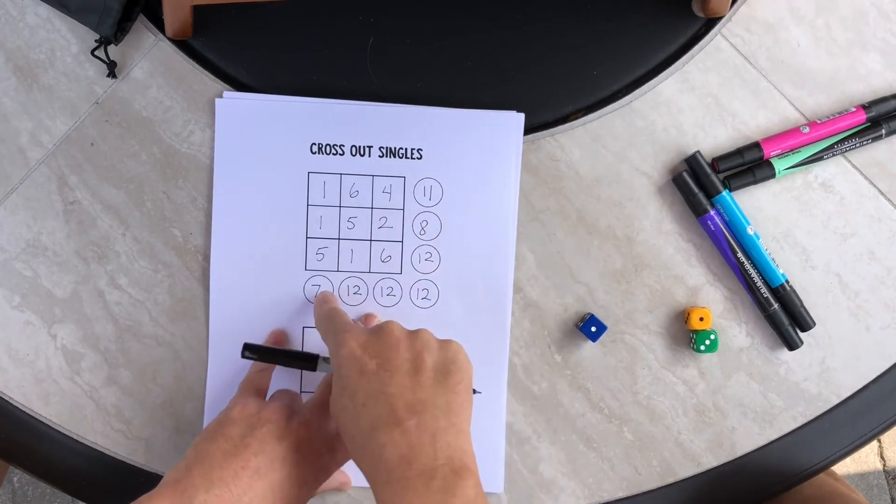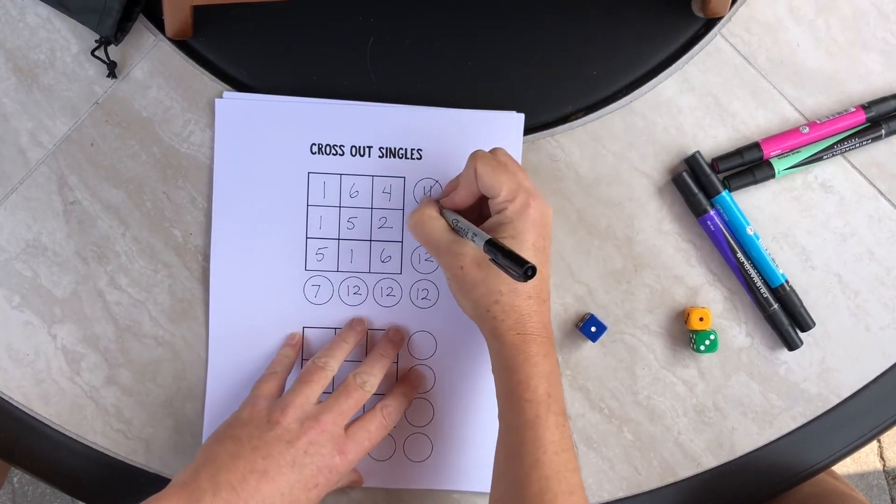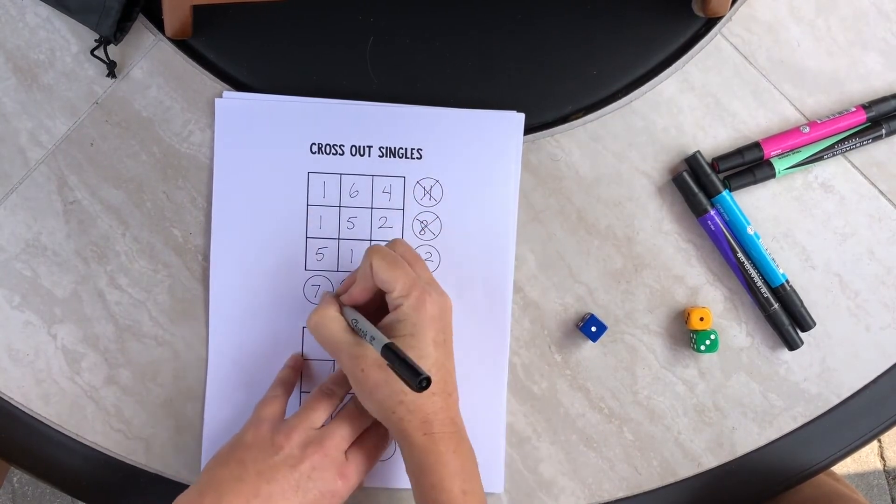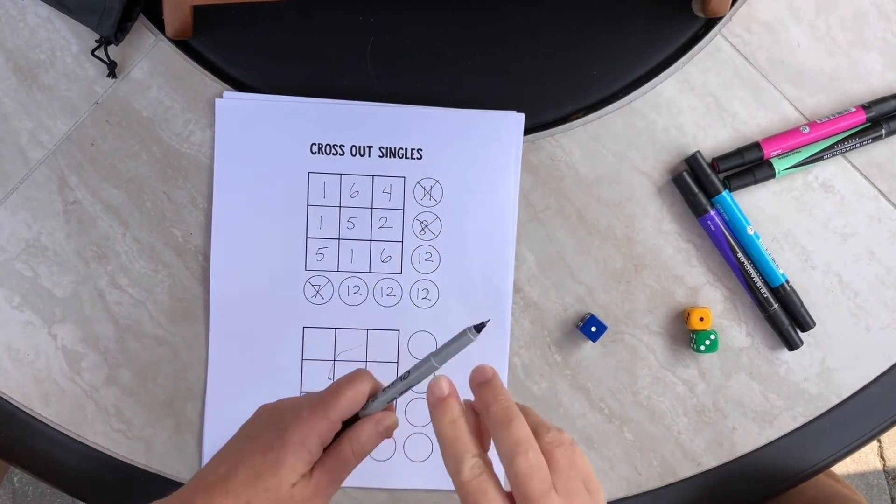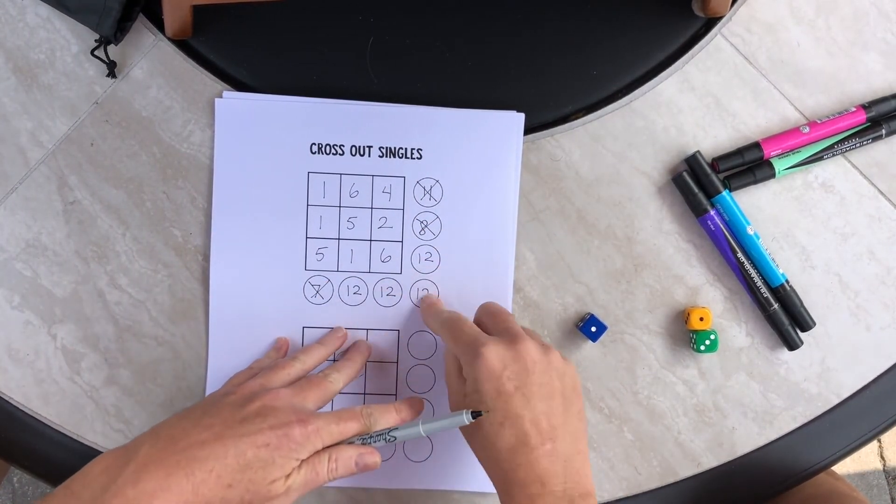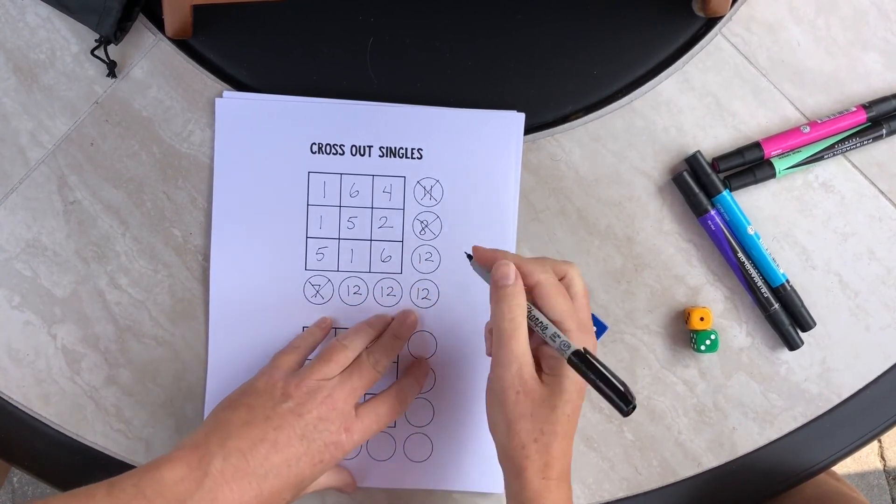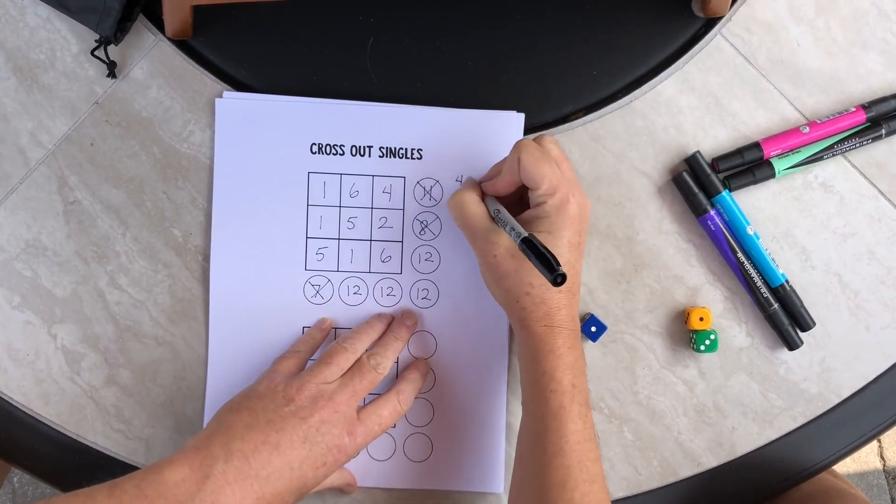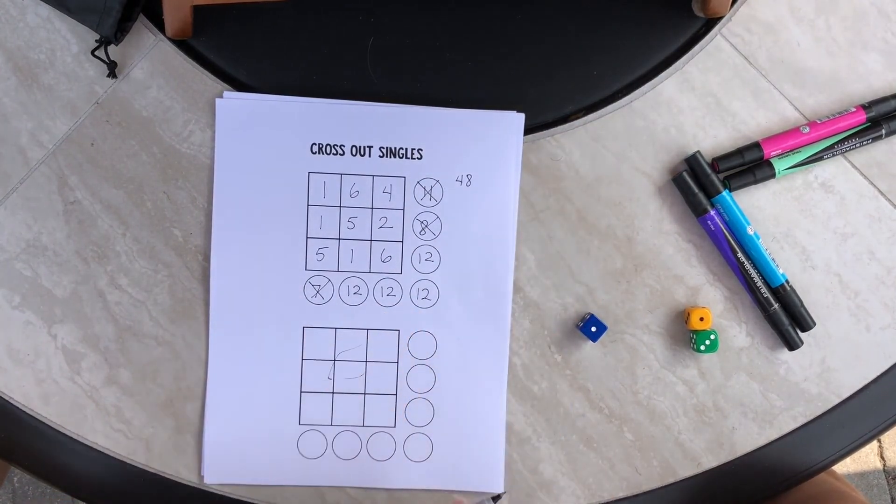All the other numbers are only written once. So whatever is on there one time, I cross out. And I look at just the numbers that are left. I have four twelves and I know four times 12 is 48. So my score for this game is 48.